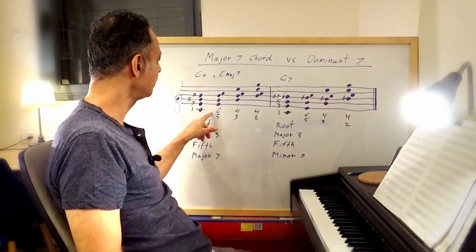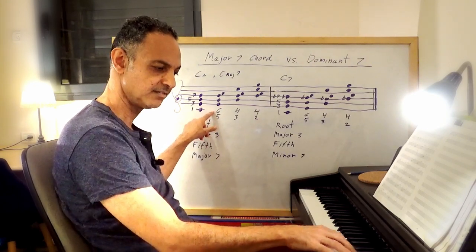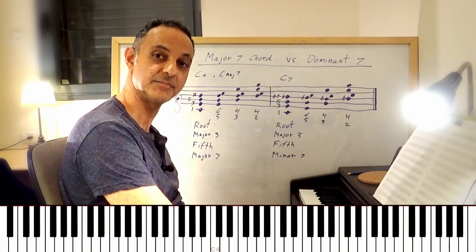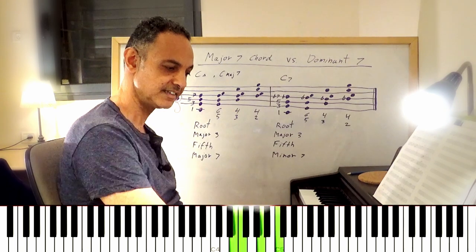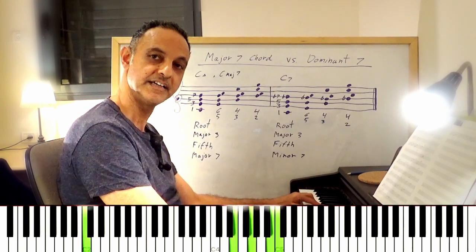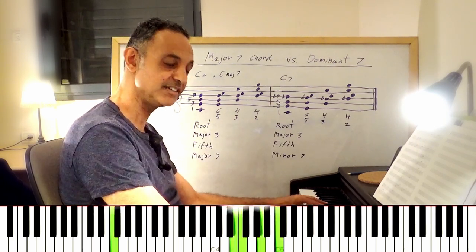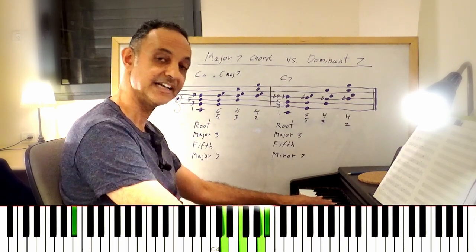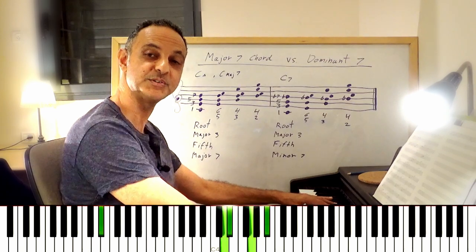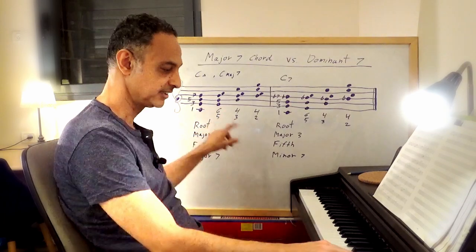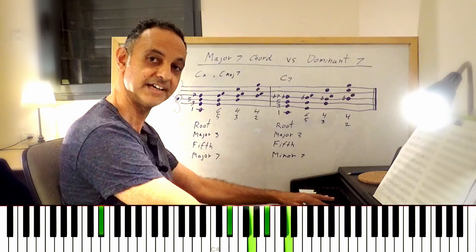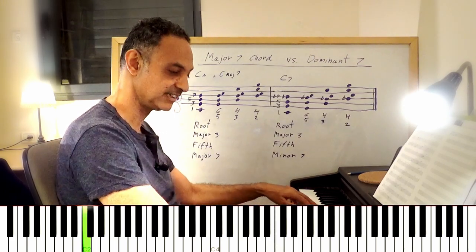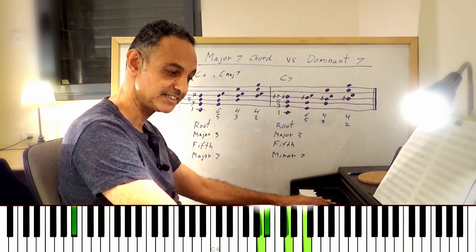You can also start from the 1st inversion (6-5) and go down by 5ths with smooth voice leading, or start from the 2nd inversion (4-3), or from the 3rd inversion (4-2). For example, C major 7 in 4-2 going to F major 7 in 6-5, then B flat major 7 in 4-2, alternating inversions through the cycle of 5ths.